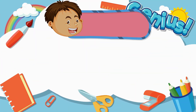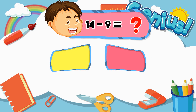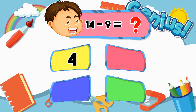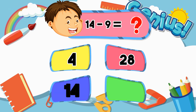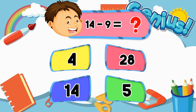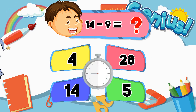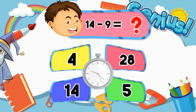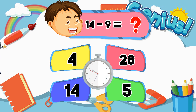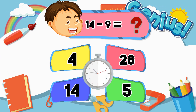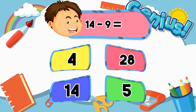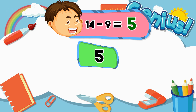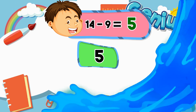What is 14 minus 9? 24, 28, 14, 15. Answer: 25.